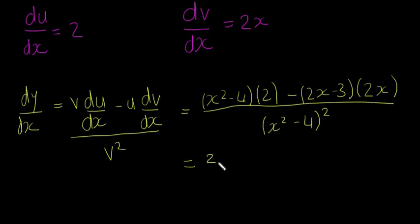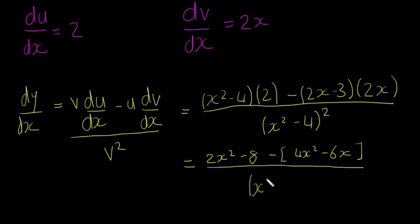So if we multiply this out, we're going to get 2x squared minus 8, and on this side, I'm going to keep the minus there, and we're going to get 4x squared minus 6x, and this is all going to be divided again by our x squared minus 4, all squared. So we're not going to touch that.